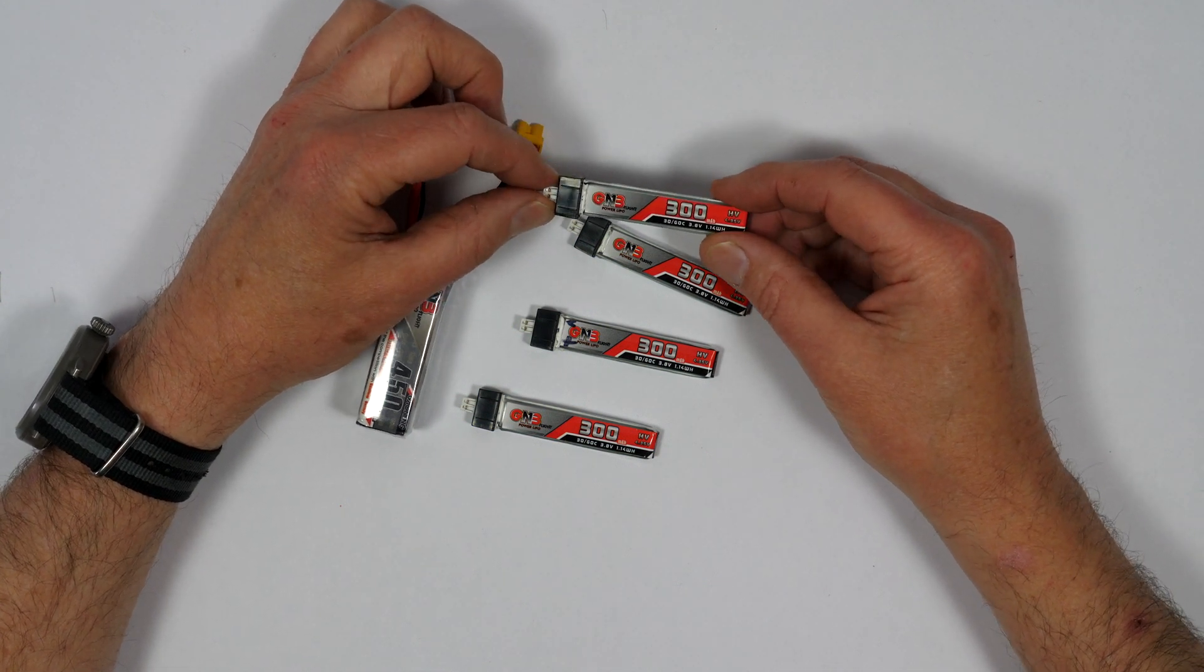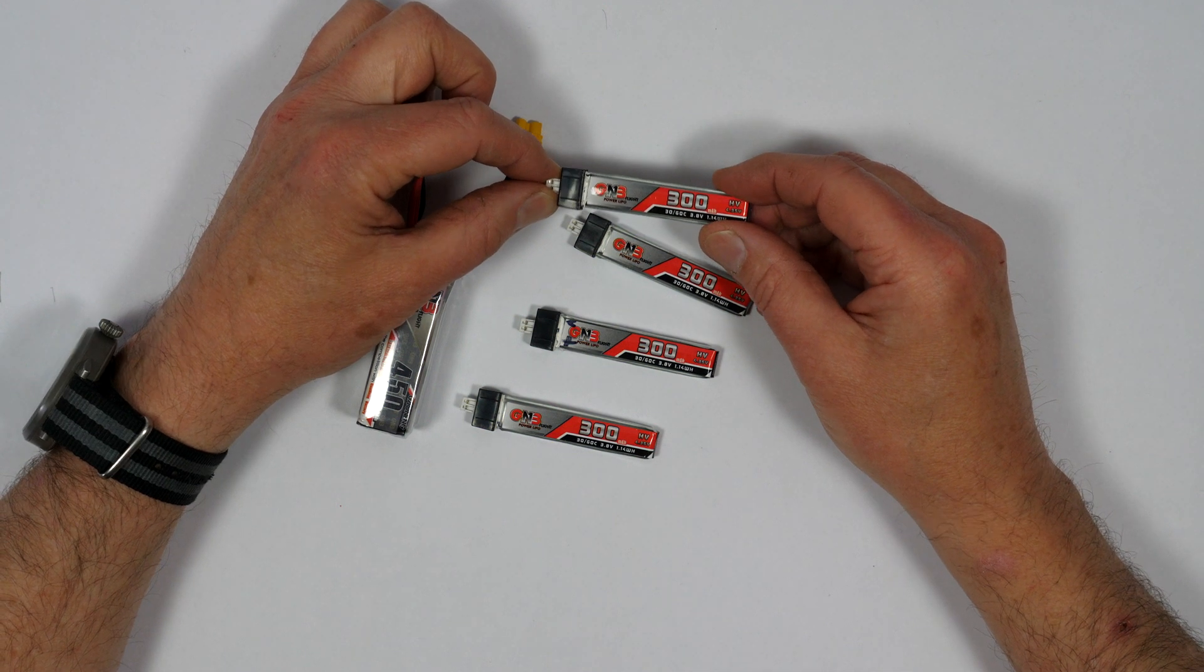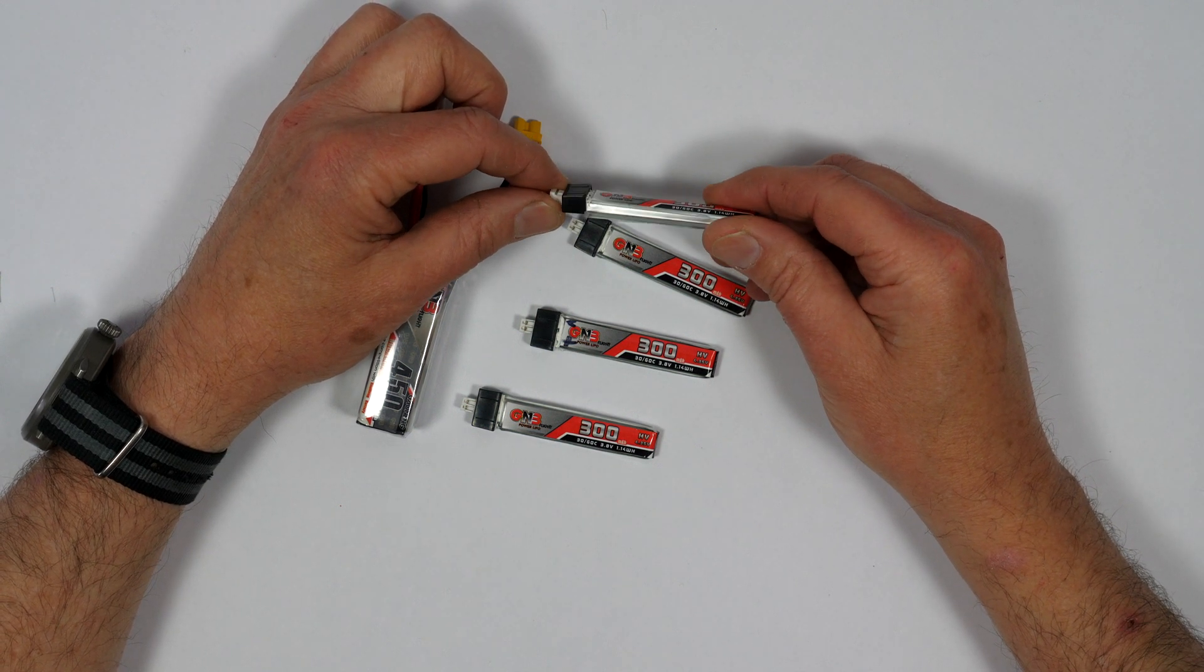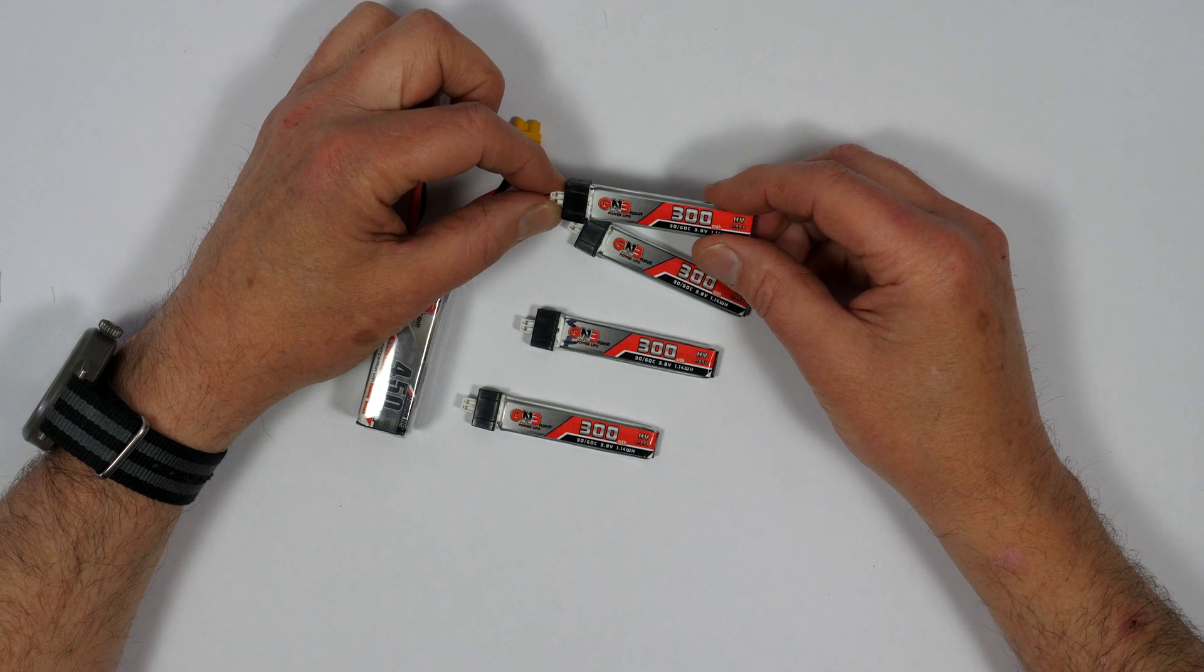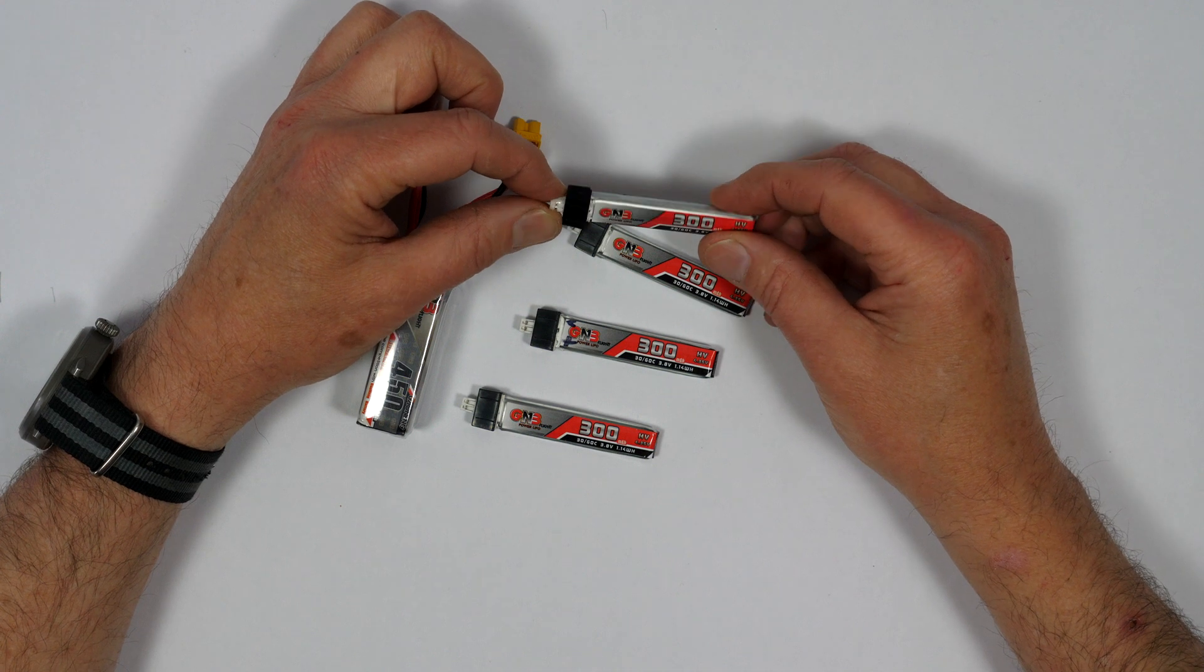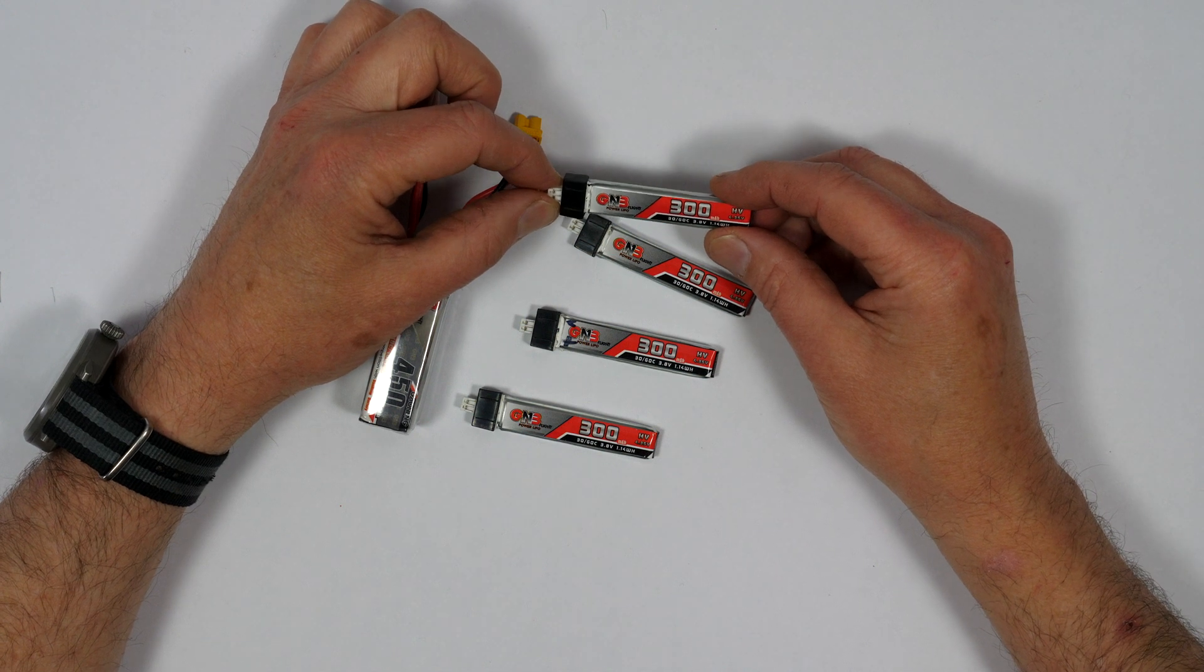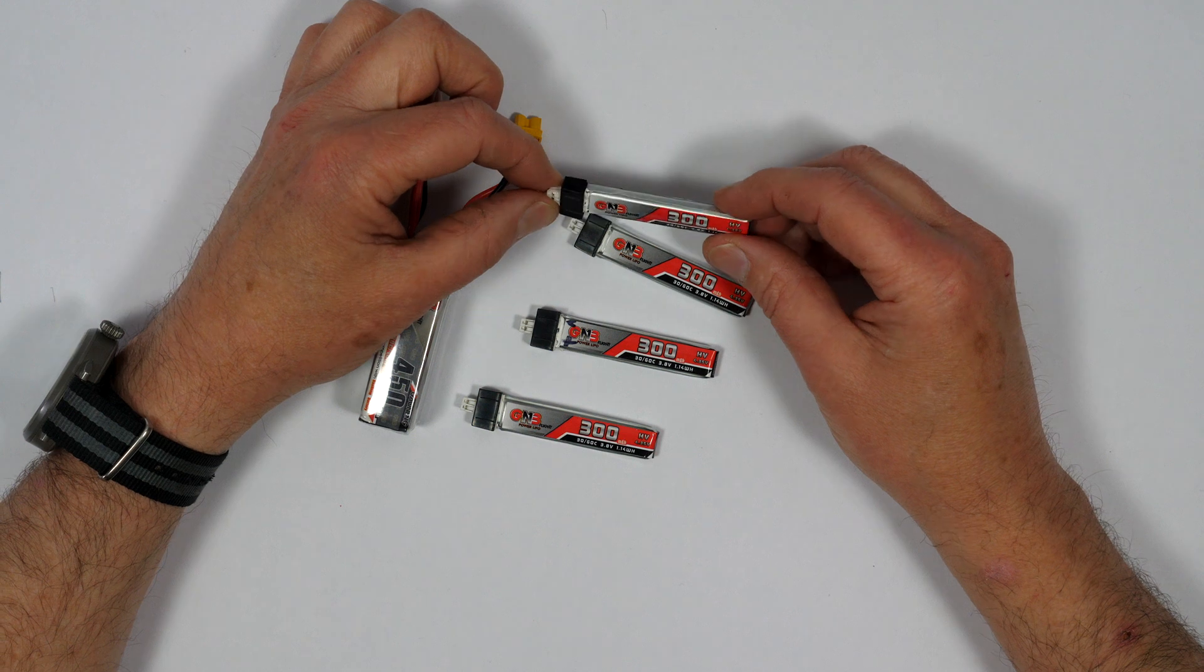If you leave these on the shelf over winter when you're not using them and they aren't at storage charge, you'll probably find they're all puffed up and angry looking when you come back to them in the spring, or they simply won't charge. I've even seen bad ones where the cell polarity has reversed. You may be able to coax them back to life, but more likely you'll need to bin them responsibly and get new ones.